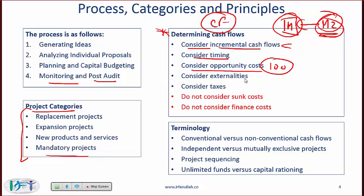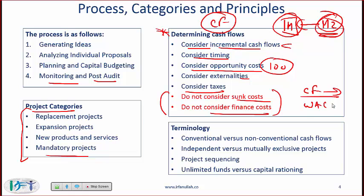Consider externalities, both positive and negative. If your project creates a benefit for another project in the company, that benefit needs to be considered. If there is a negative externality such as cannibalism — where your project causes another part of the business to suffer — that also needs to be considered. Cash flows must be on an after-tax basis. Sunk costs should not be considered in the decision-making process, and you should not consider finance costs, since the finance cost is already built into WACC.